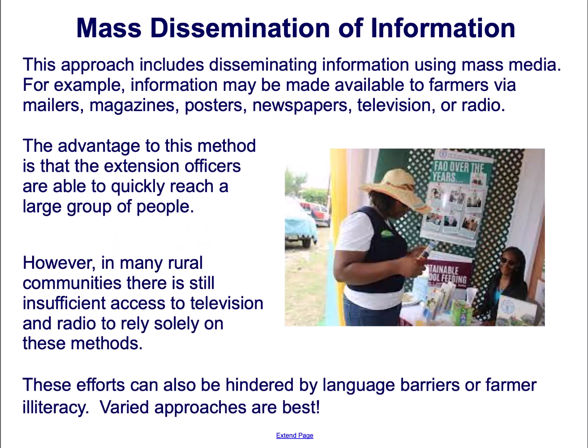Mass dissemination of information. This approach includes disseminating or passing out information using mass media. For example, information may be made available to farmers via mailers, magazines, posters, newspapers, television, or radio.